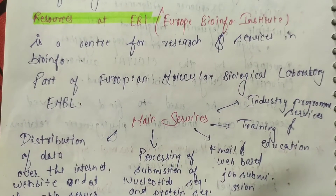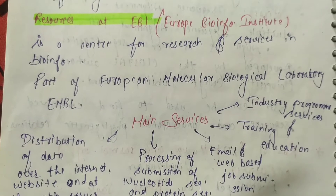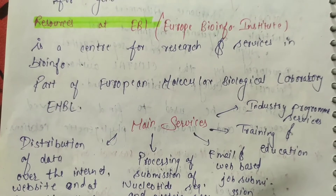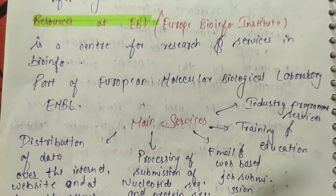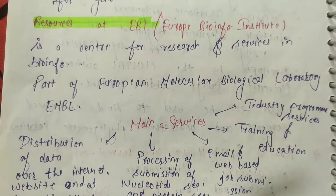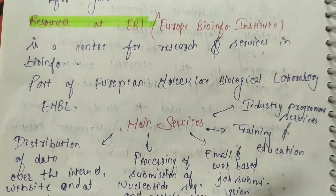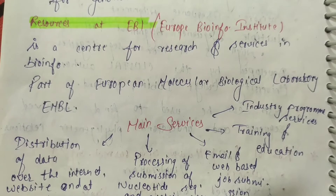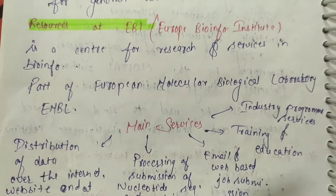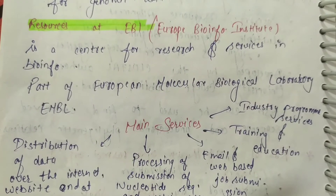Hello everyone, welcome to the channel Bitter Biology. Today we will discuss EBI resources at EBI. Firstly, what is EBI? EBI is Europe Bioinformatics Institute, which is a center for research and services in bioinformatics. It is a part of the European Molecular Biology Laboratory, also known as EMBL.